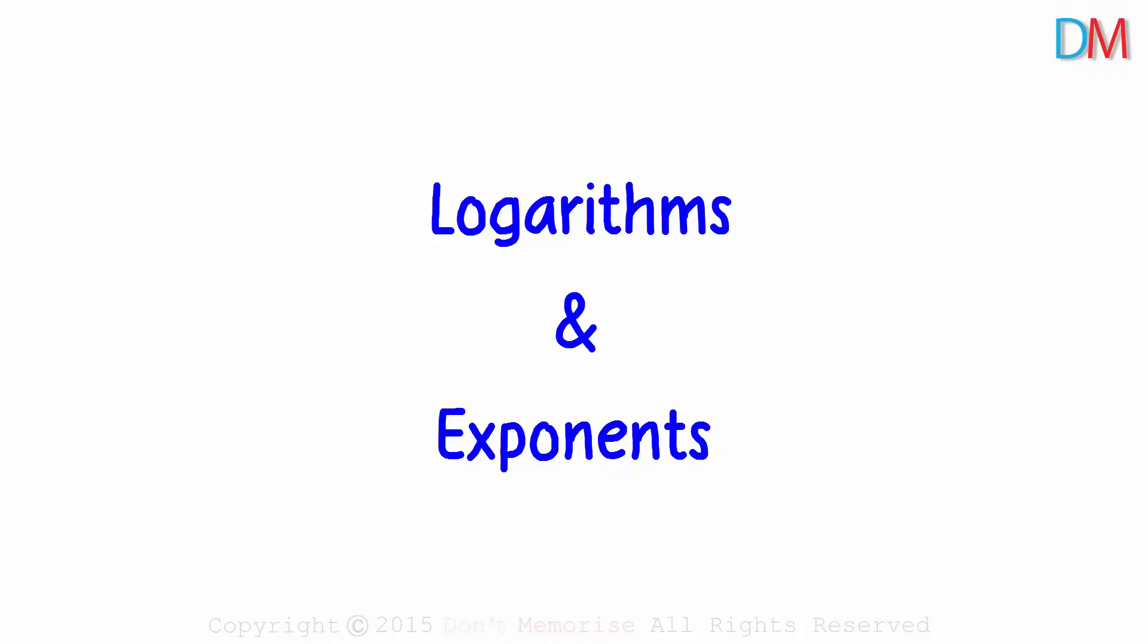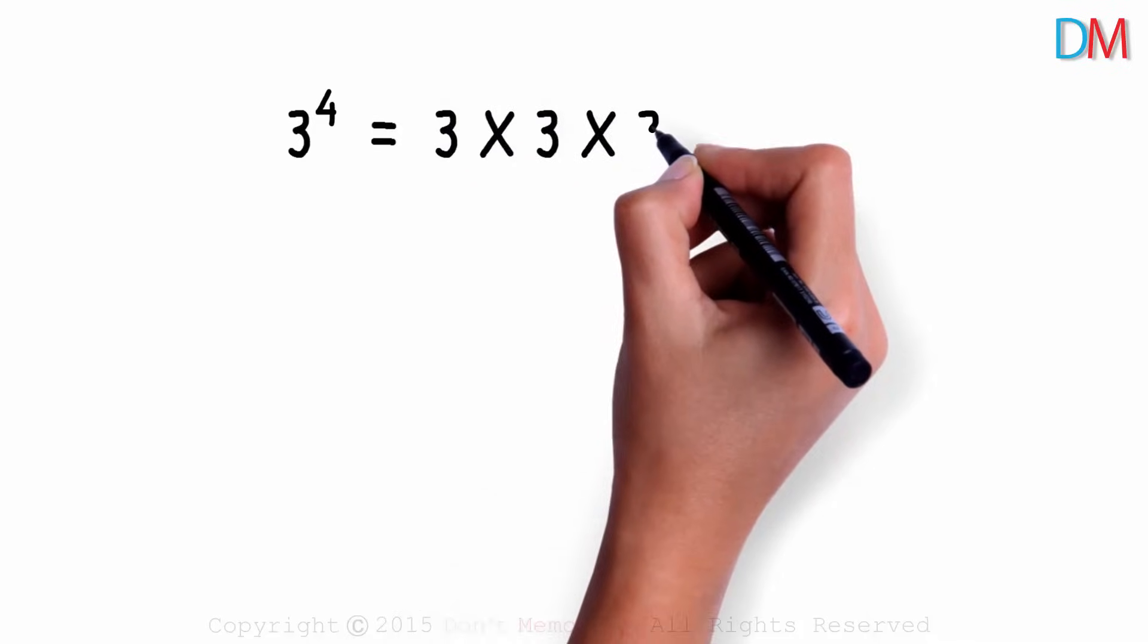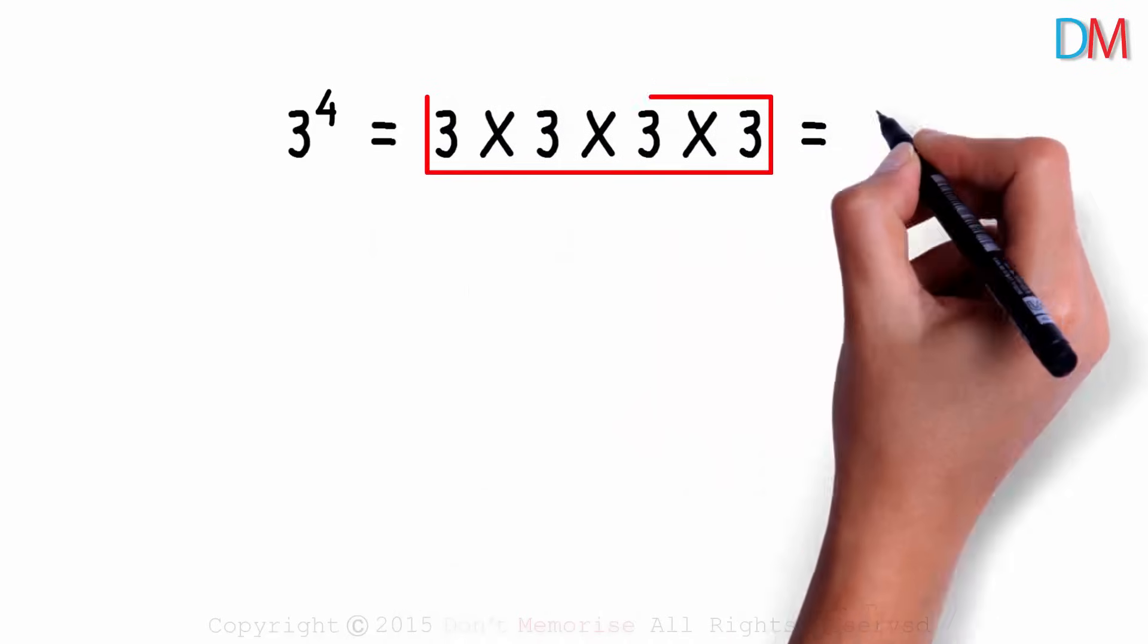Logarithms and exponents are pretty closely related. What is 3 to the power 4? It is 3 times 3 times 3 times 3. That will equal 81.